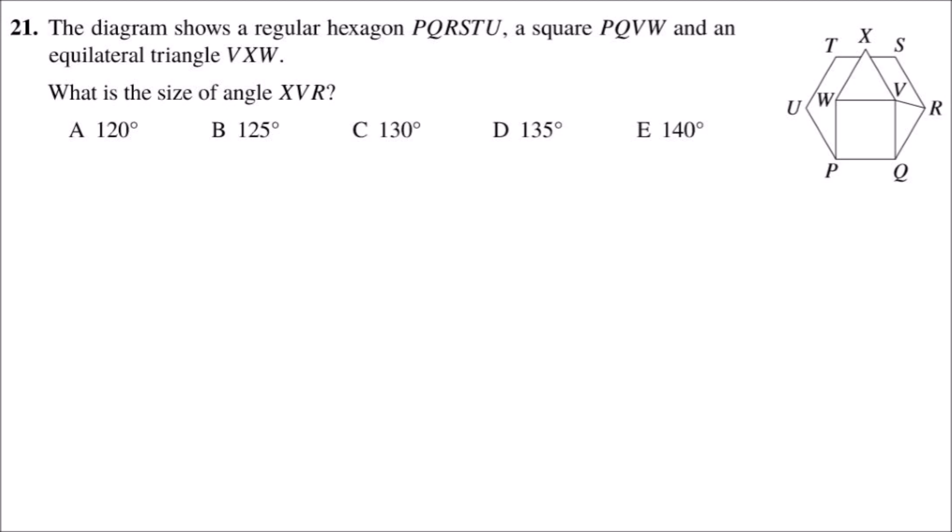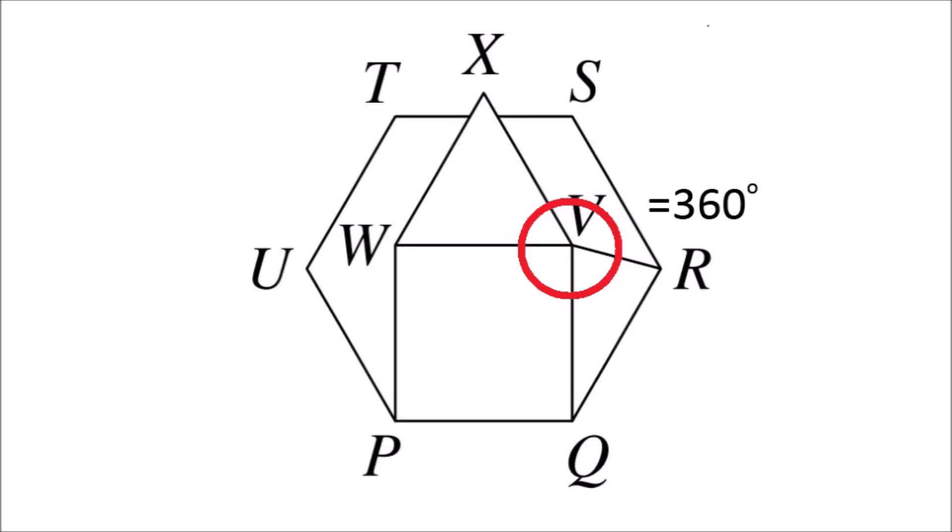First, you need to know that the sum of angles about a point is 360 degrees. So the sum of angles around the point V is going to equal 360 degrees. Therefore, if we find the angle in the equilateral triangle, the angle in the square, and the angle QVR, then we can find the angle XVR.